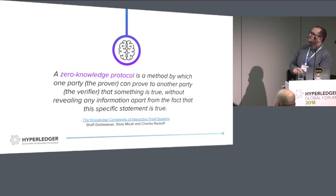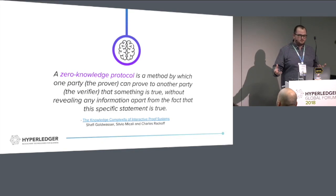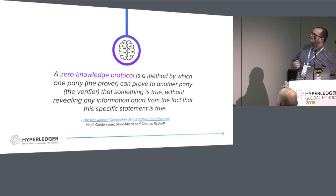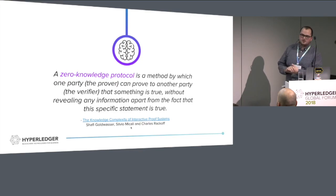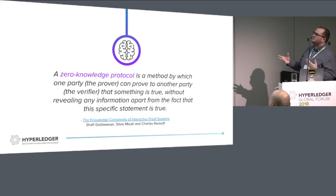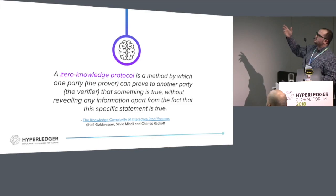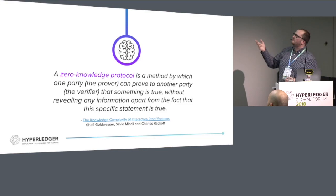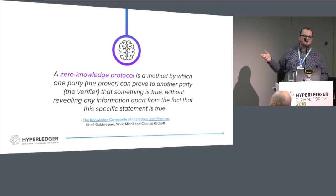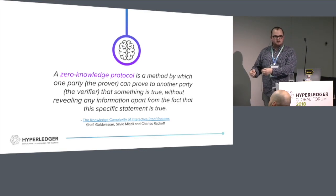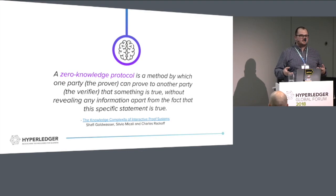A zero-knowledge proof is a method by which one party, the prover, can prove to another party, the verifier, that something is true without revealing any information apart from the fact that this specific statement is true. We can reveal information about information using zero-knowledge proofs. I can reveal that I'm over 21 without revealing my actual date of birth - that's the thinking behind this.